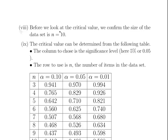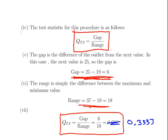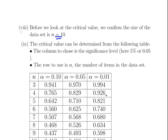Before we look at the critical values, we confirm that the size of the dataset is N equals 10. There are 10 values. You might not be told it, but you can just count them off: 1, 2, 3, 4, 5, 6, 7, 8, 9, 10. So N equals 10.